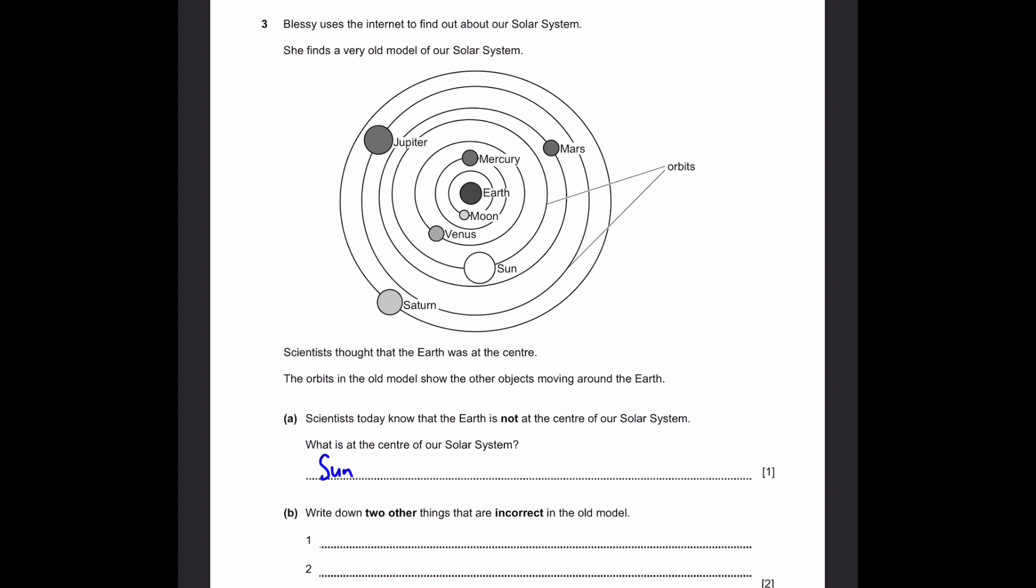B. Write down two other things that are incorrect in the old model. Let's look at the planets. We have Mercury, Venus, Earth, Mars, Jupiter, Saturn. Where's Uranus and where's Neptune? They are not present because they didn't discover them at the time. So Uranus and Neptune are not present.